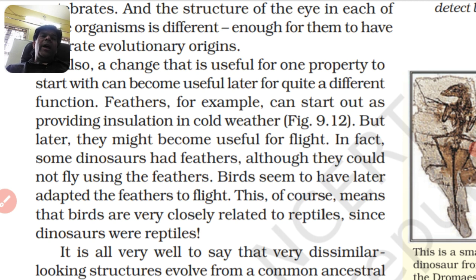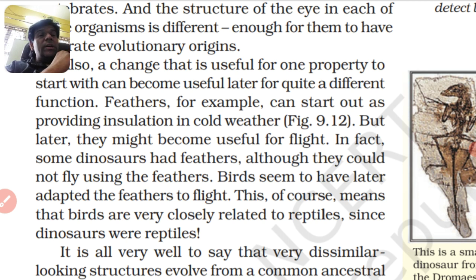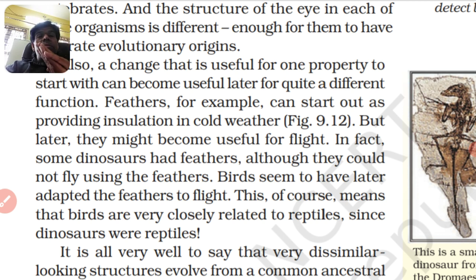In the same way, there were dinosaurs and reptiles. The dinosaurs used feathers to keep their body warm. However, as the evolutionary stages came, the right changes came to the right DNA, and birds were able to use feathers for flight. The dinosaurs could not fly, but birds could, because both evolved from a common lineage. So the main work of feathers was originally to protect and insulate. So birds seem to have later adapted the feathers to flight. This means birds are very closely related to reptiles.